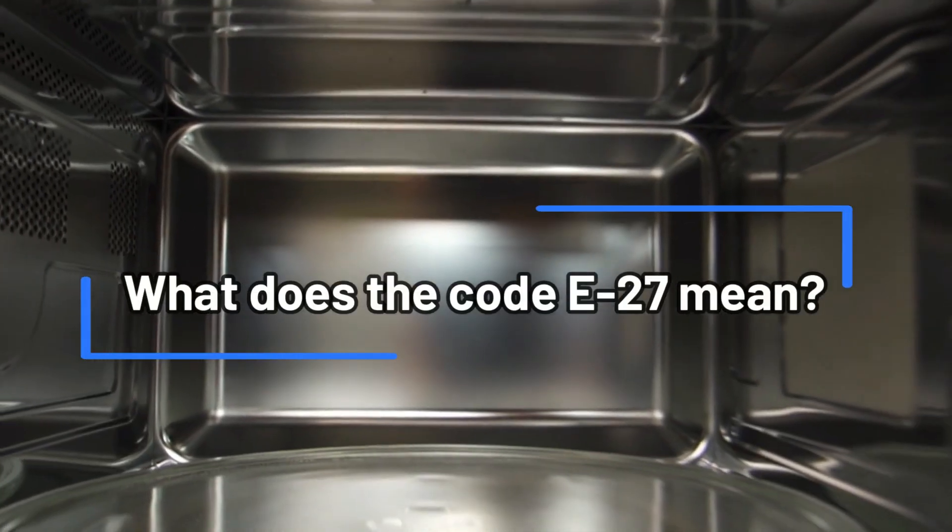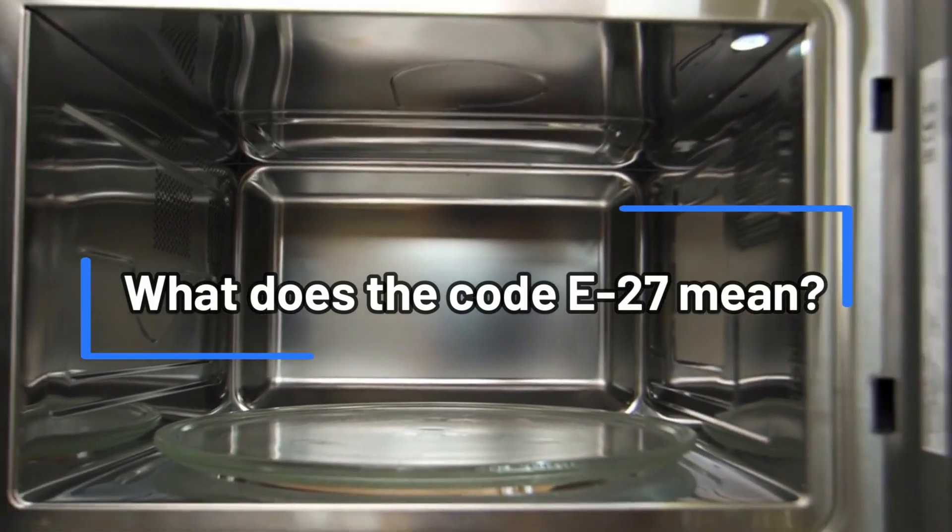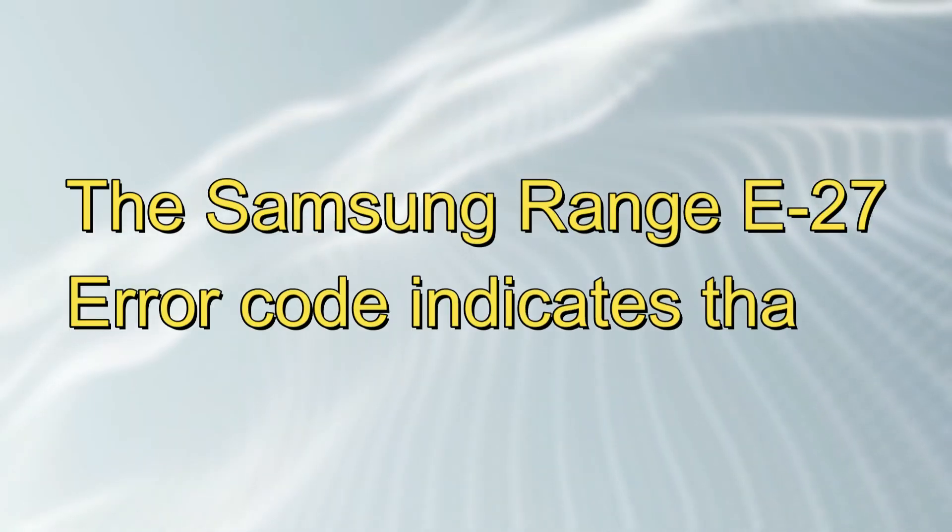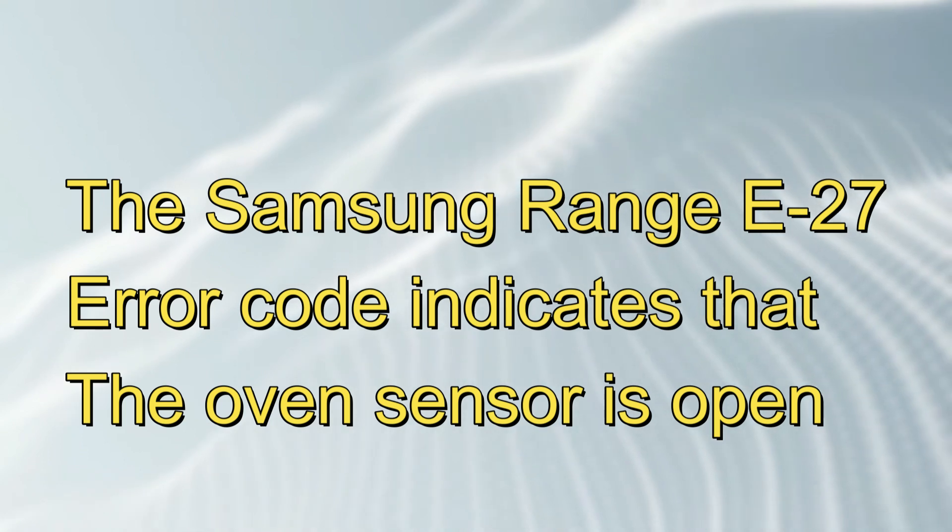But first, what does the code E-27 mean? The Samsung Range E-27 error code indicates that the oven sensor is open.